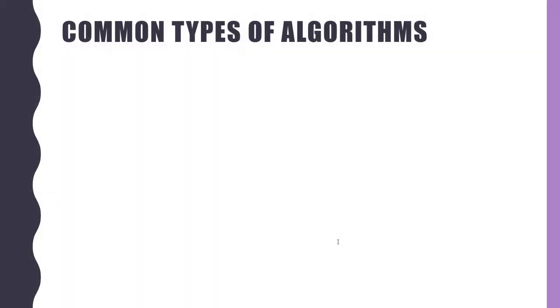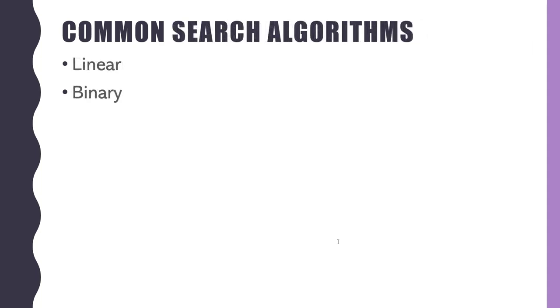Some of the most common types of algorithms you'll ever see: sorting and searching. Why does this stuff matter? We're either trying to search through and find something, or trying to order data in some specific way — sometimes both. Let's look at two common search algorithms: linear search and binary search.